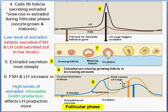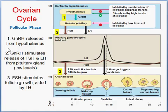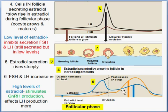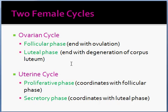The steep rise of progesterone acts as a negative feedback on GnRH production from the hypothalamus, which shuts down the anterior pituitary from producing FSH and LH. As progesterone rises, the ruptured ovary becomes the corpus luteum, which begins to produce progesterone and estradiol. This brings us into the secretory phase and the luteal phase. The luteal phase ends with the degeneration of the corpus luteum, which occurs if fertilization does not take place.